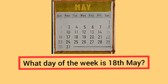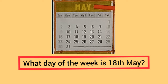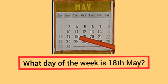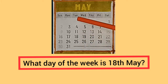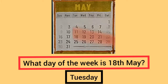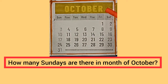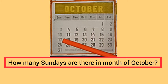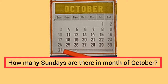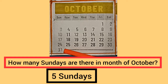Students, let's now look at the 5th month, May. What day of the week is 18th May? Here it is Tuesday. Now we find how many Sundays are there in the month of October. Let's count: 1, 2, 3, 4, 5. So there are 5 Sundays in the month of October.